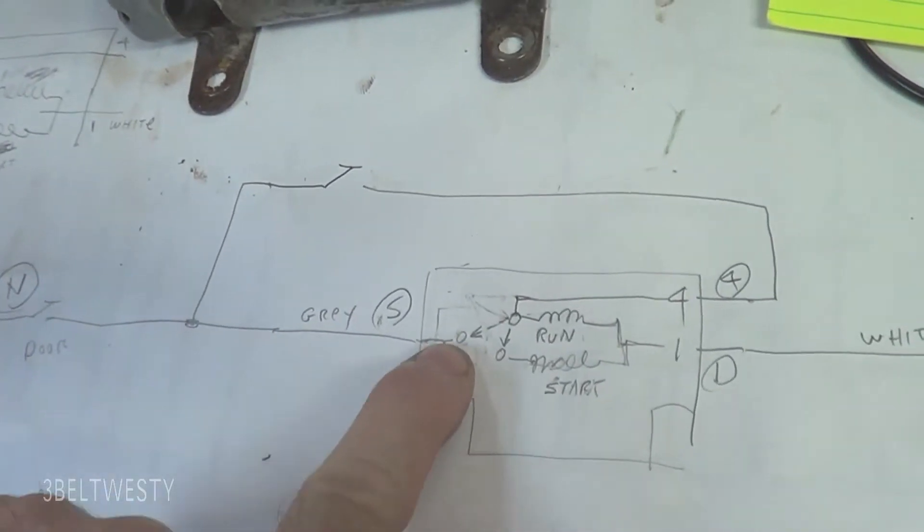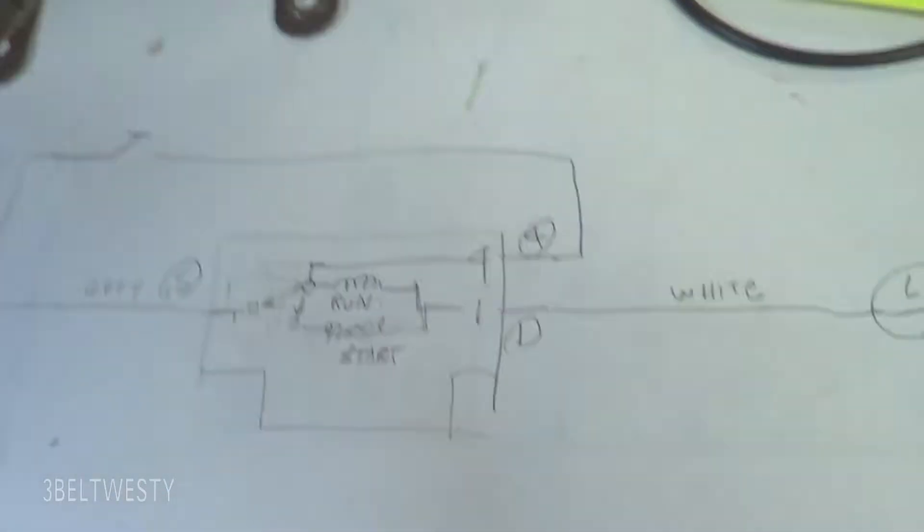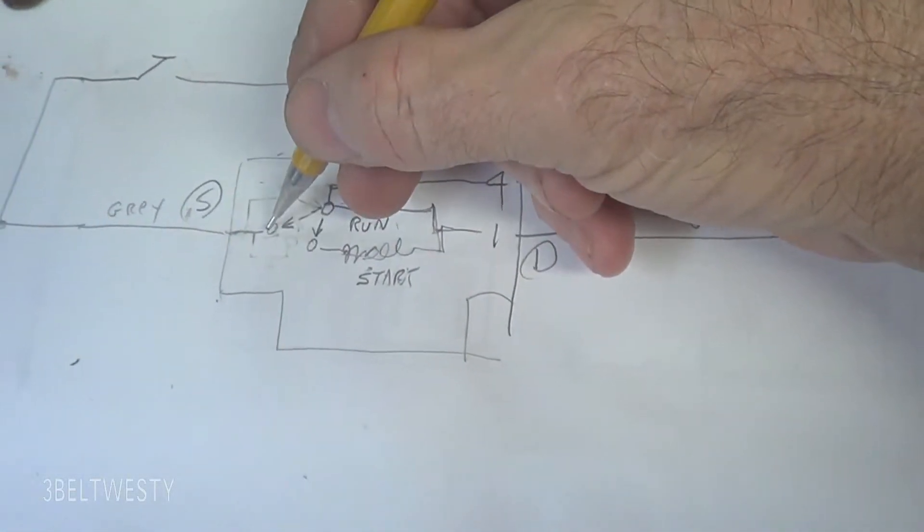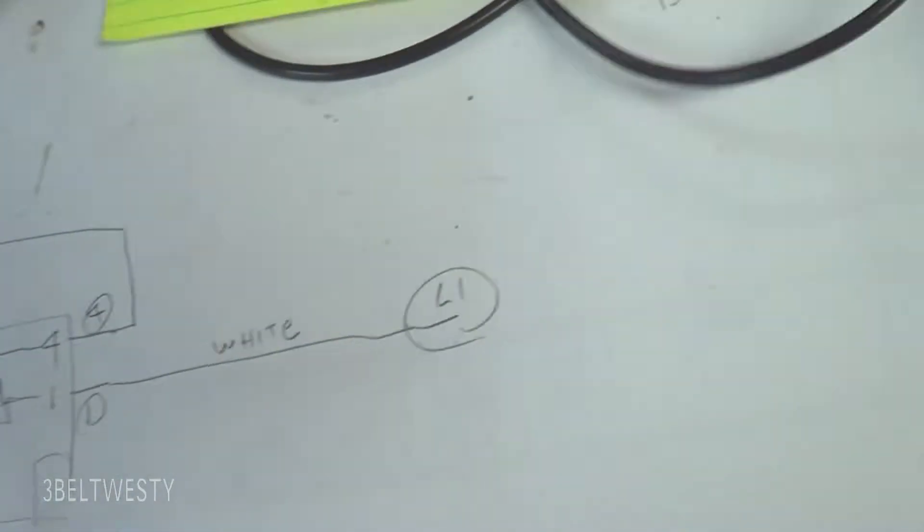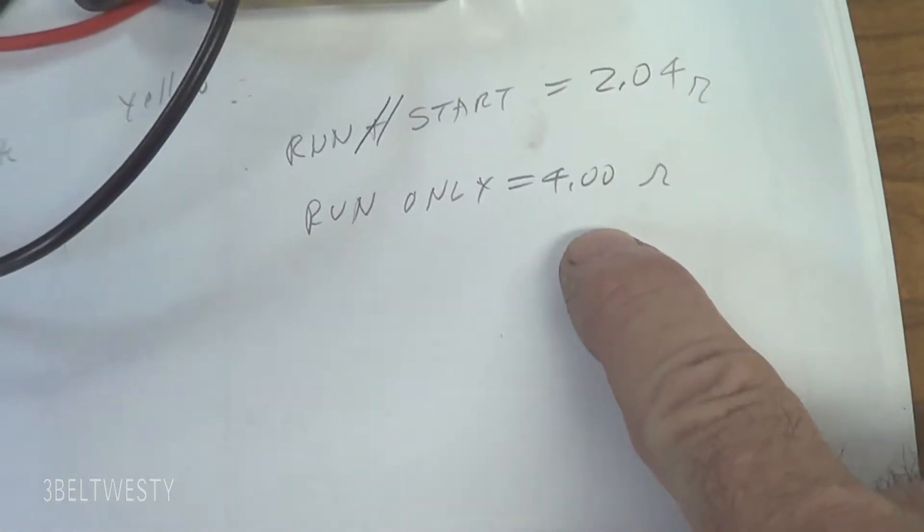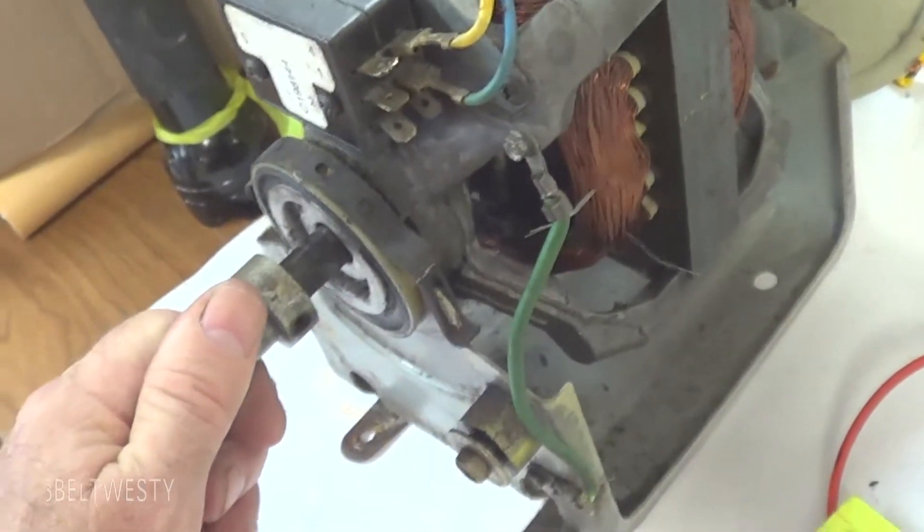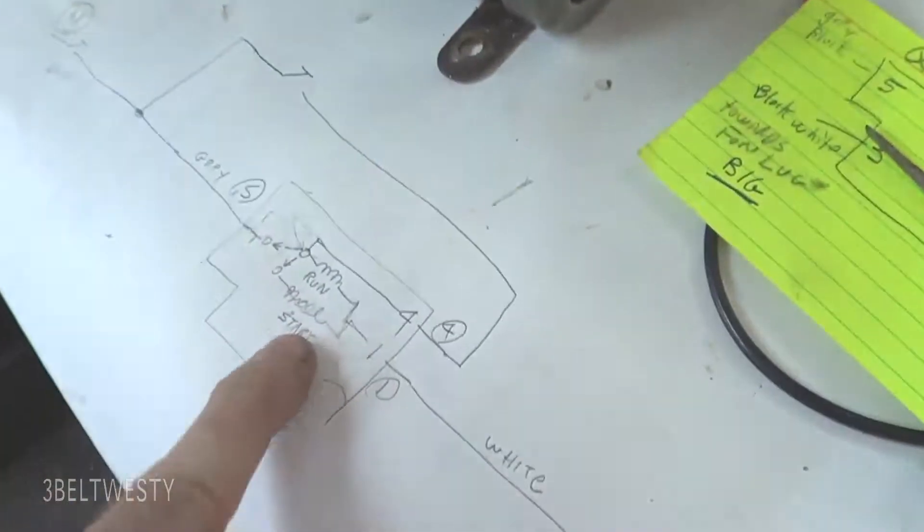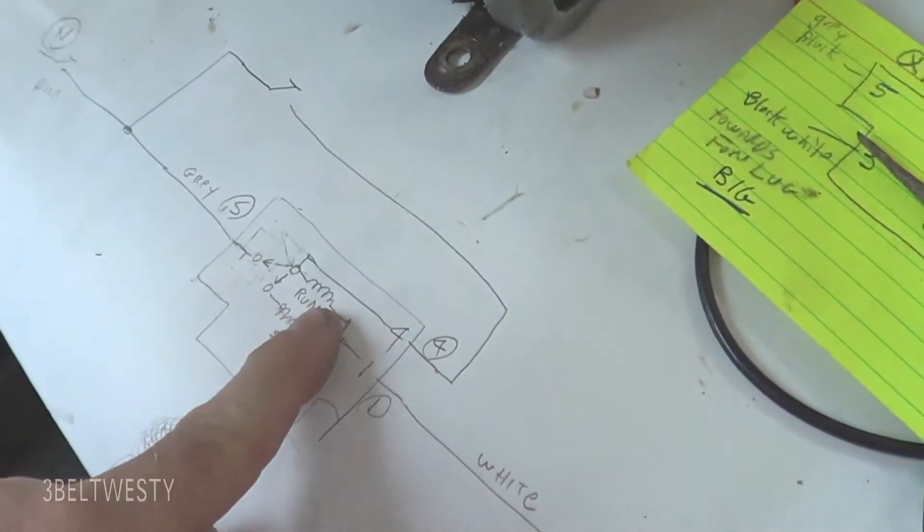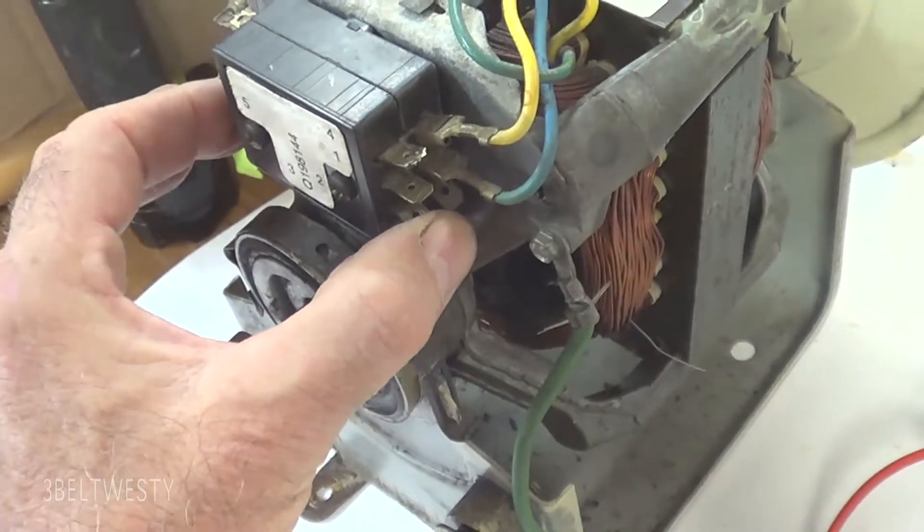So, this current, this terminal here, this one isn't hooked to anything until it comes up to speed. So, when it goes up to speed, this flies over and takes out the start winding. And what I've found out here is the run and start together is about two ohms. Run only is about four. So, there's two things are going on. When this comes up to speed, it takes out the start winding. And then over here, it goes ahead, and it's only using the run winding. And then it also goes through and connects this up so the heater element can work.